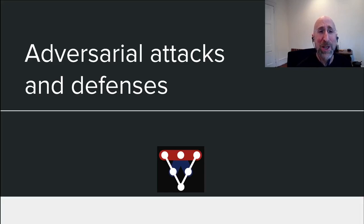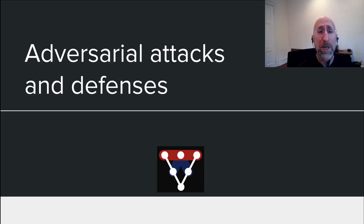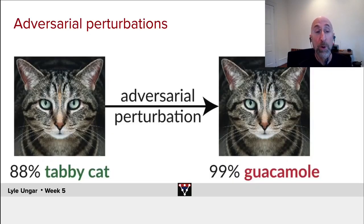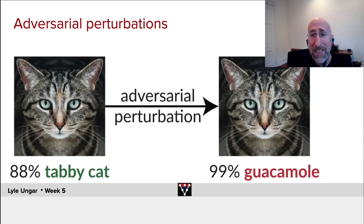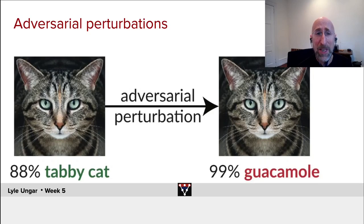For our last topic of the week, a super cool one: adversarial attacks against deep learning networks. A number of people have shown that you can make small alterations to an image or to a text and change the output of the neural net dramatically. You can take an image of a cat where the neural net says it's 88% sure this is a tabby cat, and after a small change — here's the changed image, which I cannot see the difference of — the neural net is 99% sure it is guacamole. Guacamole is not the same as a cat, so what's going on?